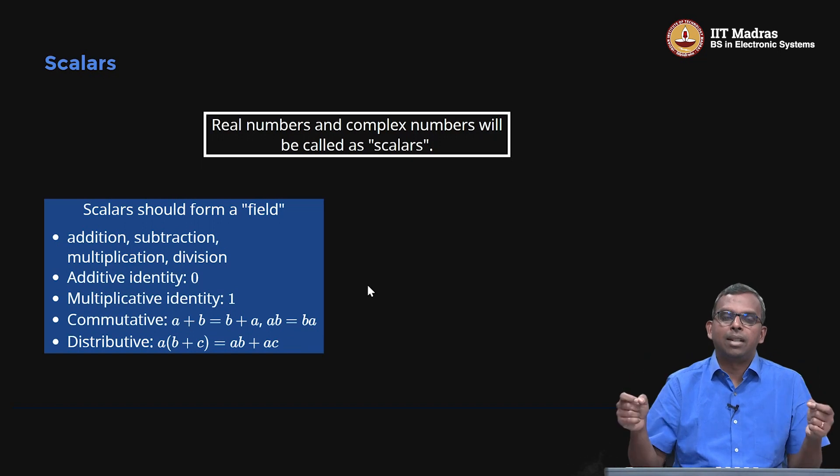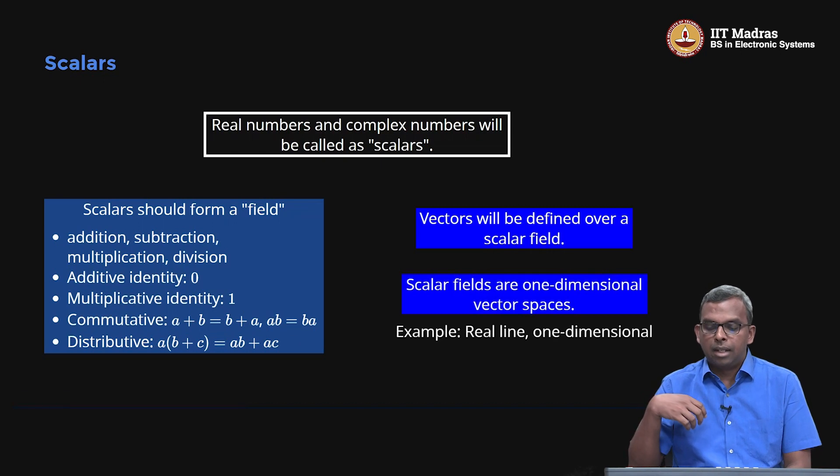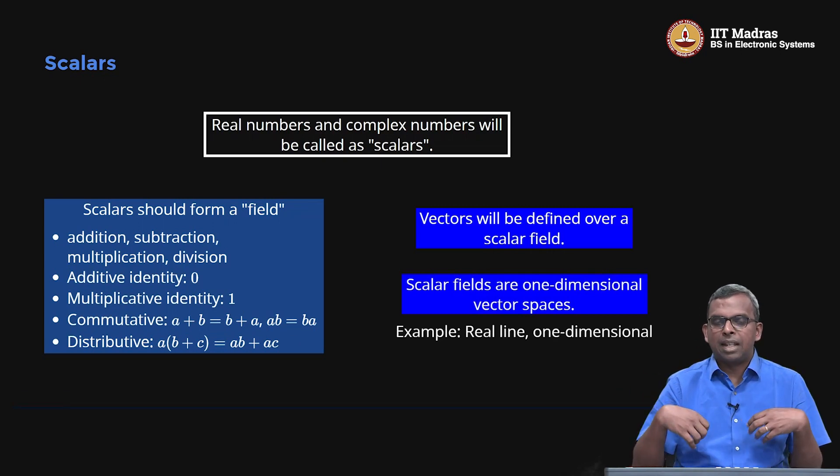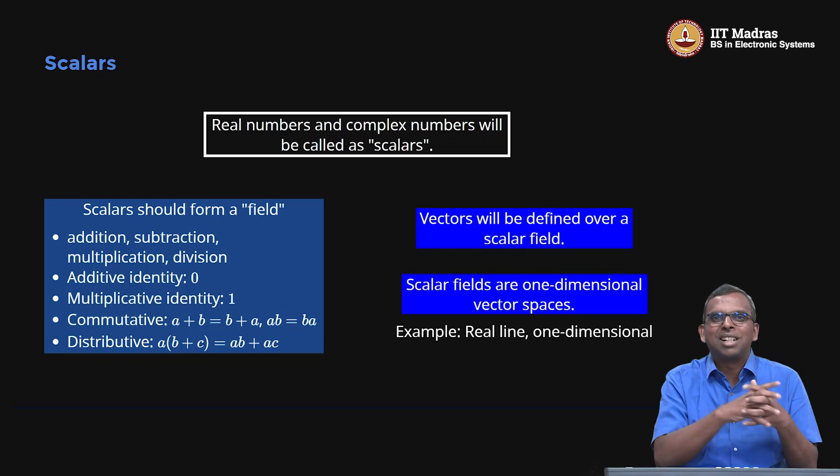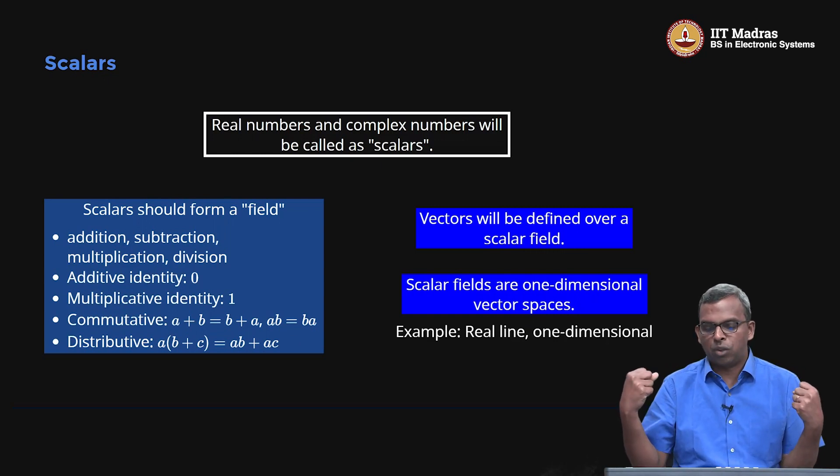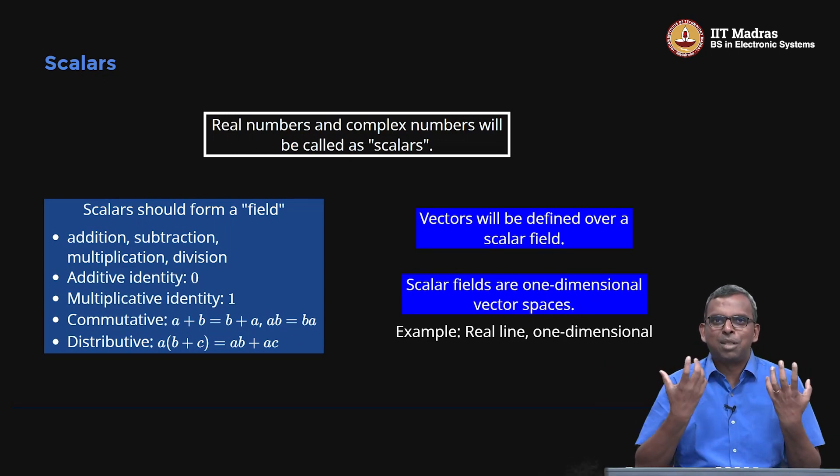Scalars are from a field, and this field in our course is going to be complex numbers and real numbers—nothing else. Vectors will be defined over a scalar field. You can also view scalar fields as one-dimensional vector spaces. The real line is one-dimensional, though you may argue complex is two-dimensional, but we'll take that up separately. For now, scalar fields are one-dimensional vector spaces for us. These are the simplest examples, very easy to deal with. They don't show much linear algebraic properties—you see those only when dimension goes up. These are the scalar fields we'll work with in the rest of this course. Thank you very much.